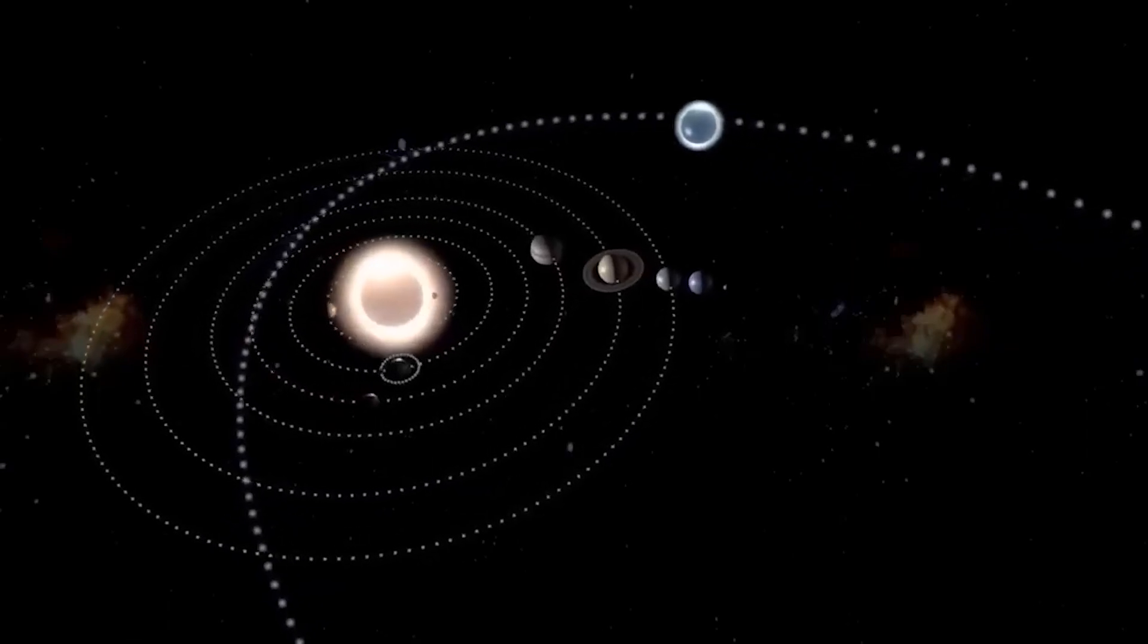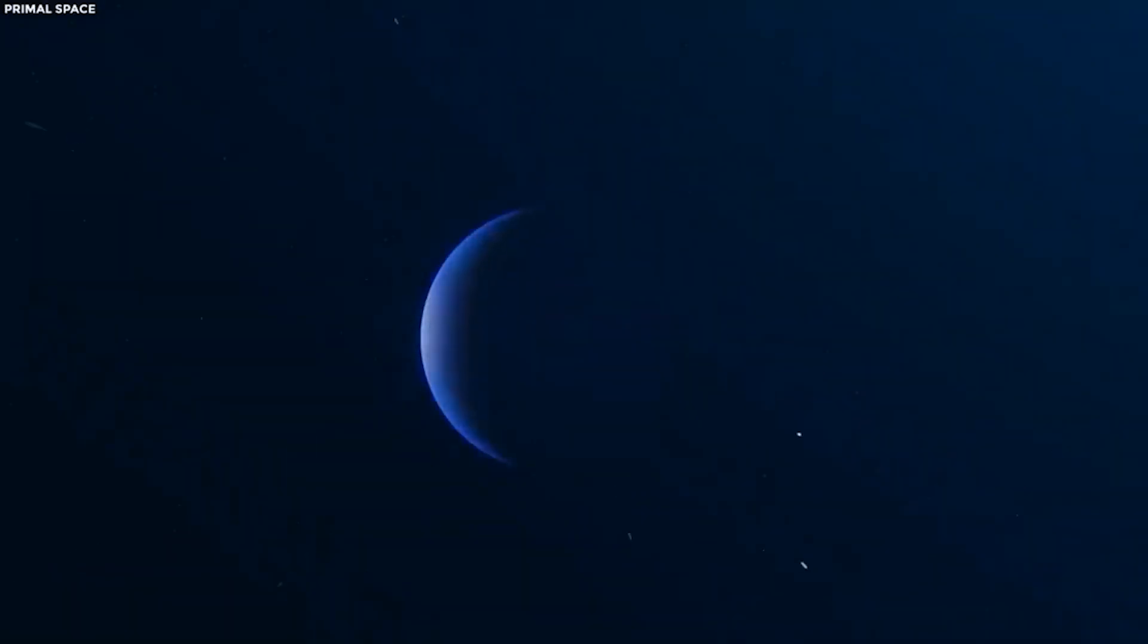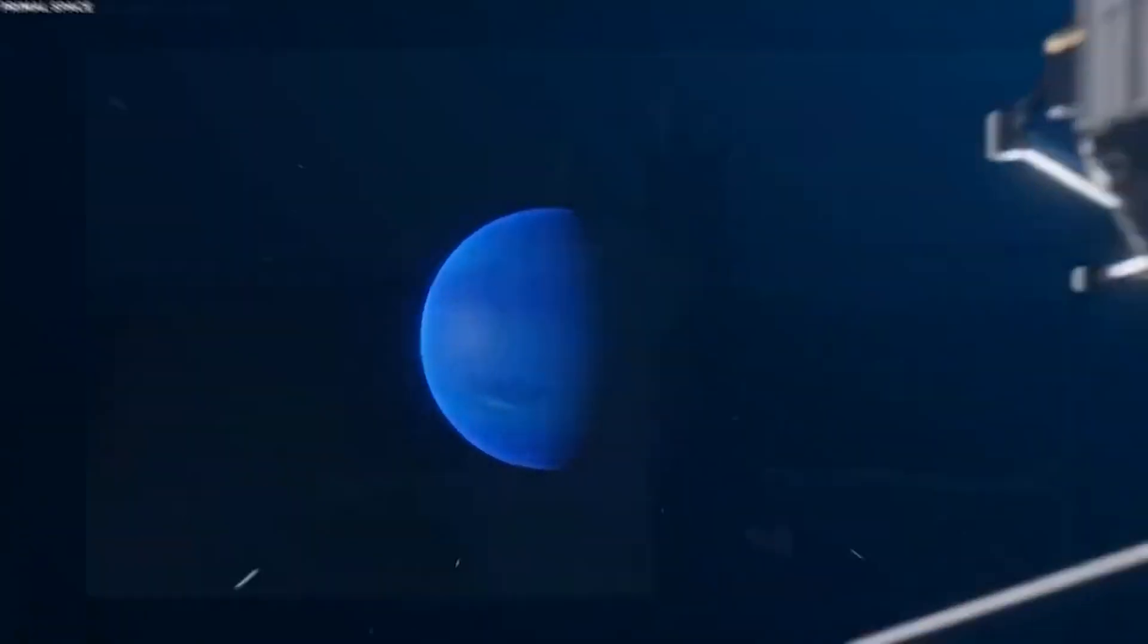Since December 2004, when Voyager 1 crossed a point in space called the Termination Shock, the spacecraft has been exploring the heliosphere's outer layer, called the Heliosheath.